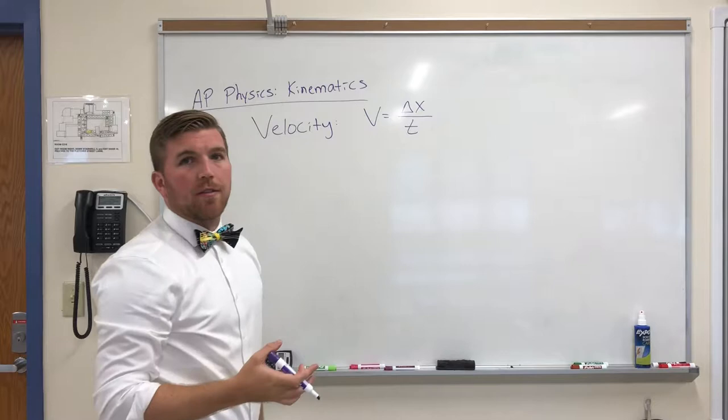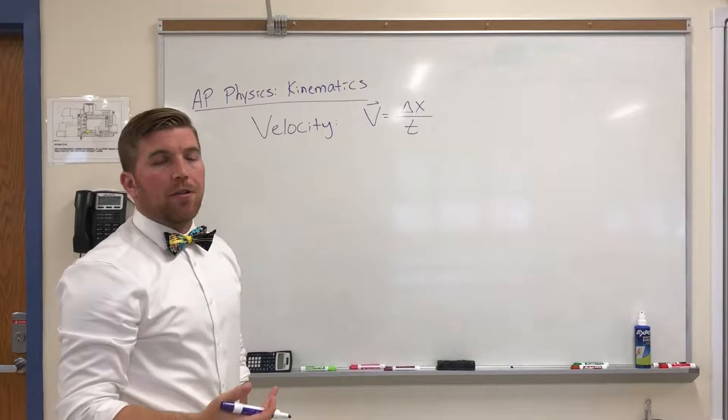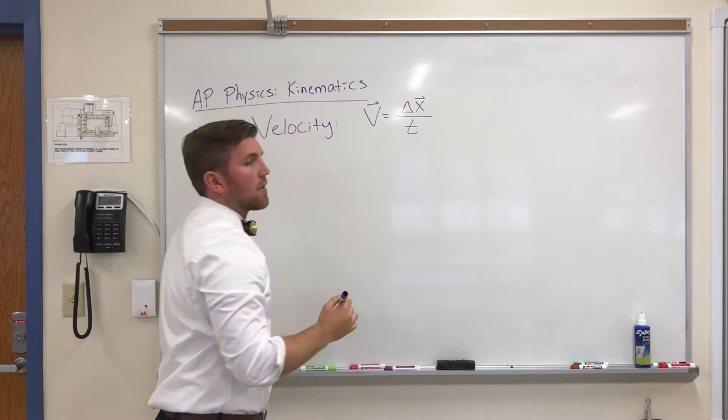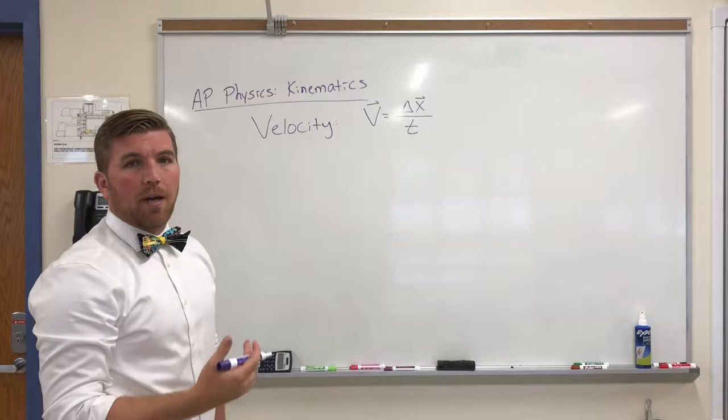Be careful to notice that it's a change in position, not total distance. So velocity is what's called a vector. Vectors have magnitude and direction, which means that this is also displacement because it is also a vector. It's not distance.